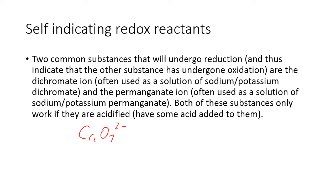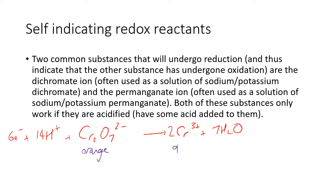The dichromate ion: Cr₂O₇²⁻ goes to Cr³⁺. Balance the chromiums — two Cr³⁺. Balance the oxygens — seven waters. Balance the hydrogens — 14H⁺. Then balance the charges — six electrons on the left. That is the dichromate half-equation. If you look at the data sheet under negative ions, Cr₂O₇²⁻ is orange and Cr³⁺ is green. So when the orange solution turns green, you know the other substance has undergone oxidation and dichromate has undergone reduction. It needs to be acidified because of those hydrogen ions in the equation.